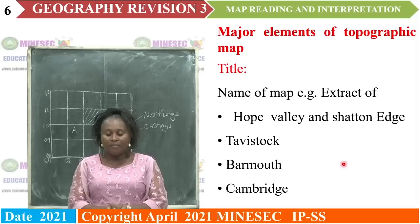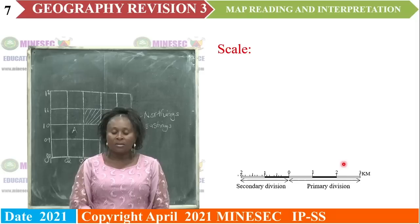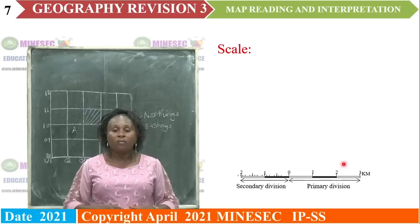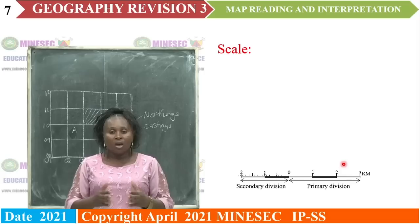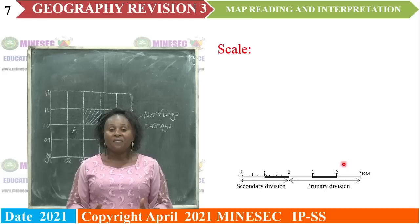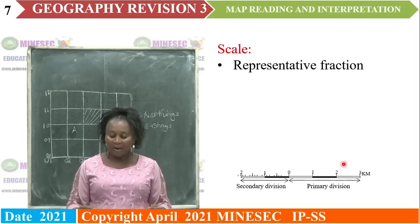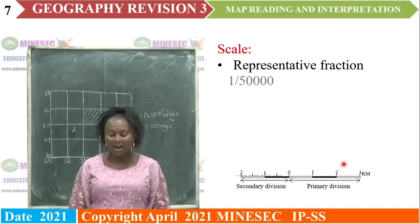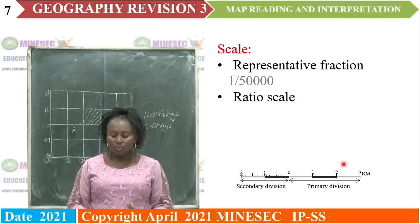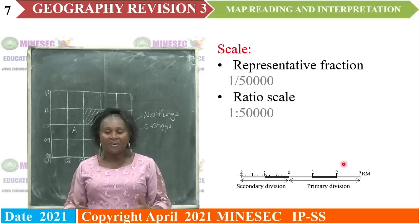These are some examples of titles of topographic maps. The next is the scale. It is a reduction of normal size or distance on the surface of the earth that has been reduced and represented on a piece of paper. There are different types of scales — scale as a representative fraction, for example one in 50,000. The map scaled 1 in 50,000 or 1 over 50,000 means representative fraction. We also have scale as a ratio, such as 1 in 25,000 or 1 in 100,000.